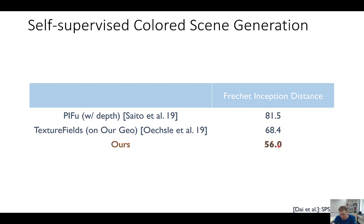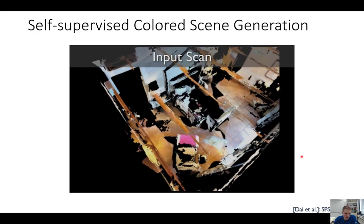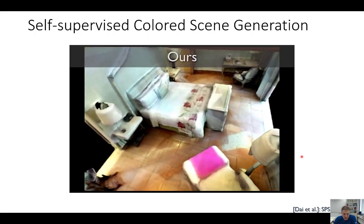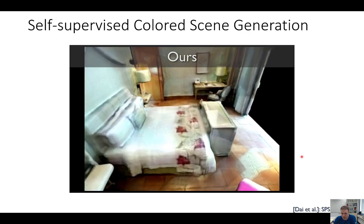It gives us better geometry because we use color observations as additional constraints. We also quantitatively evaluate color using FID distances, comparing against PIFO and texture fields. We get lower inception distances, so quite better results. Visually, we have another example: the input, geometry plus texture fields, ours, and the respective target. And we can see in a video that our results look quite nice — we now have a high-quality, high-fidelity reconstruction.